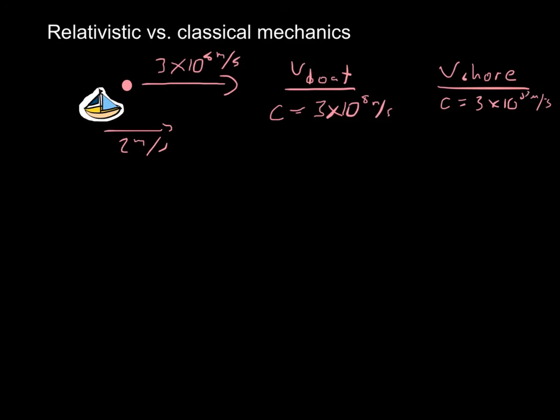You would still measure it to be the exact same 3 times 10 to the 8th meters per second. What Einstein discovered with special relativity that was so revolutionary is that light is very unique, in that no matter how fast you're moving, no matter your reference frame, you will always measure light to be 3 times 10 to the 8th meters per second.